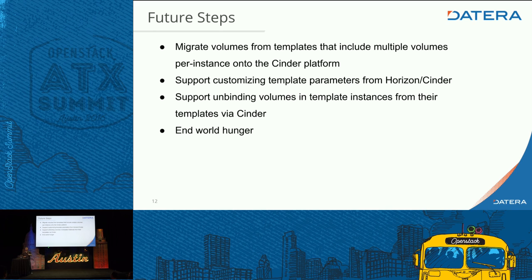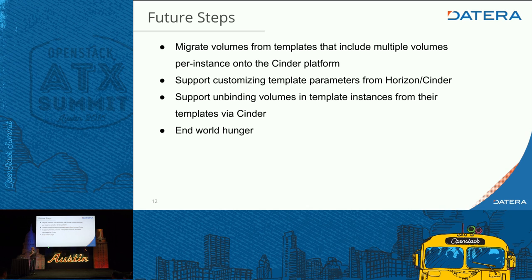We also want to support unbinding volumes from the template. In our current version 1.0, we don't support instantiating an application instance from the template and then unbinding it so it stands alone — so that if you modify the template afterwards, it doesn't affect that application instance. These are all on the roadmap but not currently available.